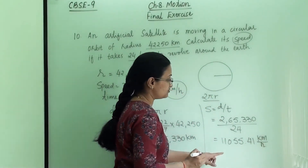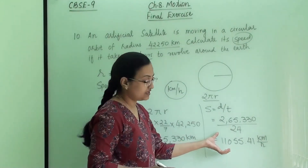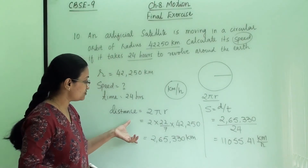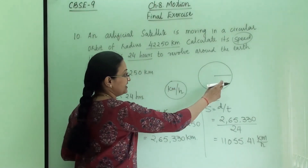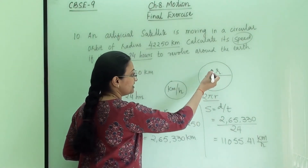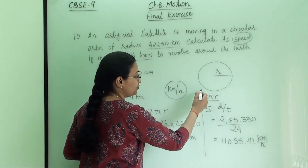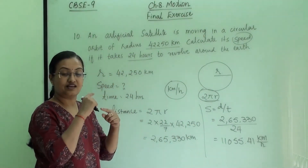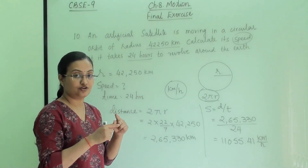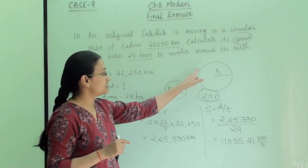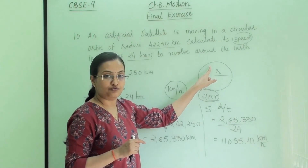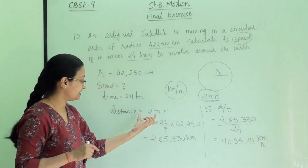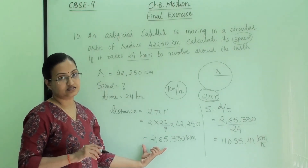So 11,055.41 km per hour is the speed of the satellite. We got this from distance divided by time, and the distance was found using 2πr — because whenever there is circular motion, we take the circumference of the circle to find the distance.